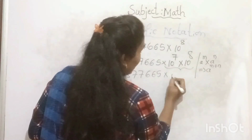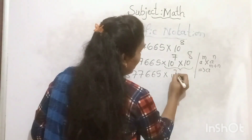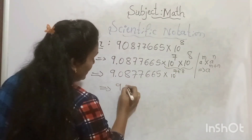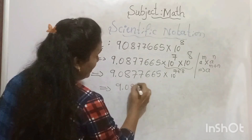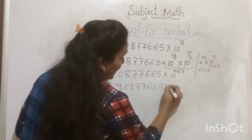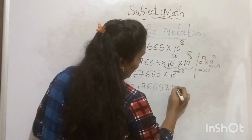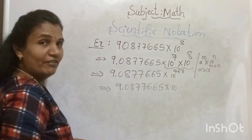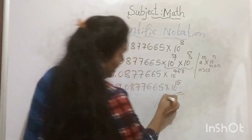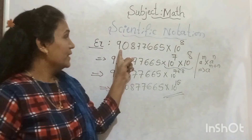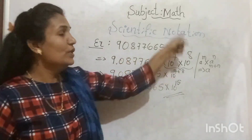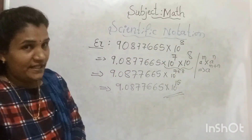So the result is 9.0877665 × 10¹⁵. This is the standard form of 9.0877665 × 10⁸.